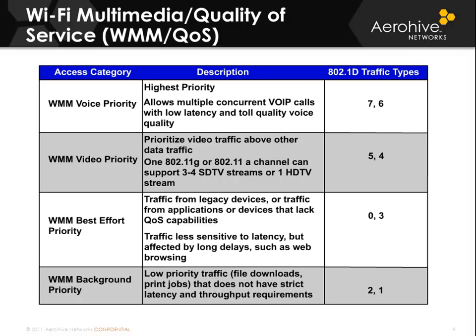Video priority would be the second priority. Best effort priority would be traffic from legacy devices or traffic from applications or devices that lack QoS capabilities. And then there's also background priority, which is very low traffic like file downloads and print jobs — things that don't have any kind of strict latency or throughput requirements.